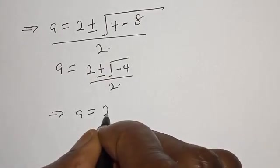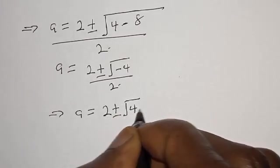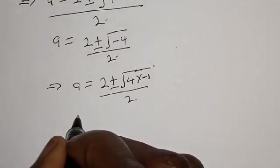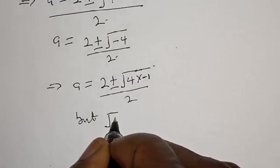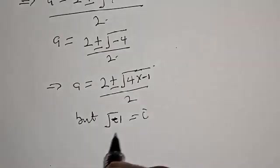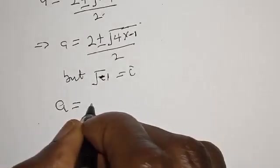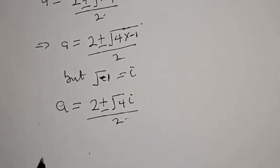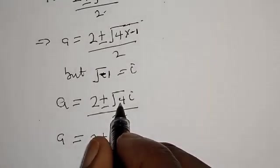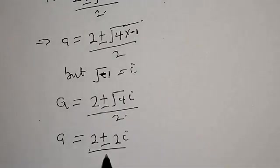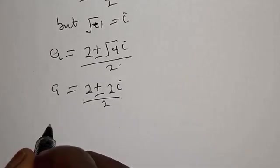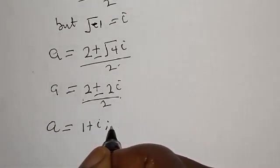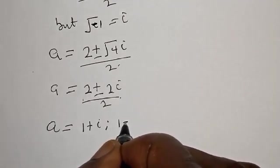Then we have a equal to 2 plus or minus square root of 4 multiplied by minus 1, over 2. Since the square root of minus 1 is i, we have a equal to 2 plus or minus square root of 4 times i, over 2. Since the square root of 4 is 2, we get a equal to 2 plus or minus 2i, over 2. Therefore the final answer for the first case is a equal to 1 plus i or 1 minus i.